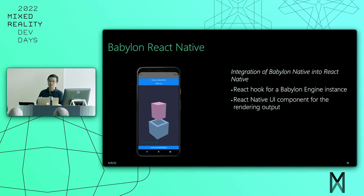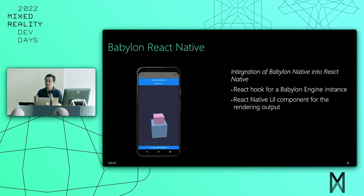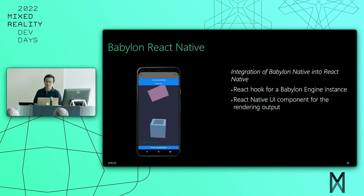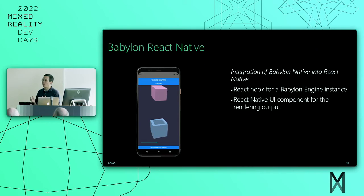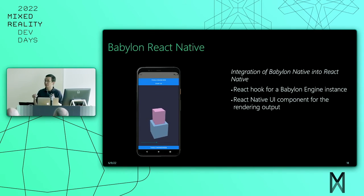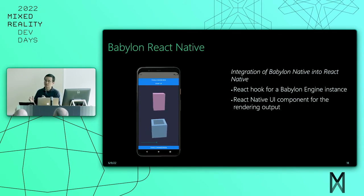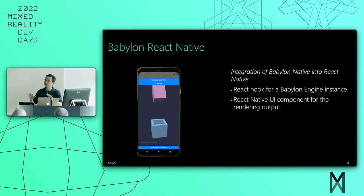This is where Babylon React Native comes in. We can think of it as the glue between Babylon Native and React Native. It provides a React hook to manage the lifetime of a Babylon Native engine instance, as well as a UI component that provides a rendering surface for Babylon Native to render to. Speaking of flexibility, Babylon Native is configured to hook into the same JavaScript context that React Native provides, so we don't have to create two separate JavaScript contexts — it's actually using the same one.